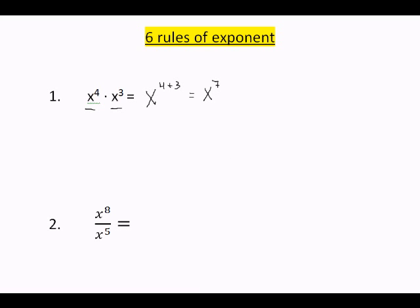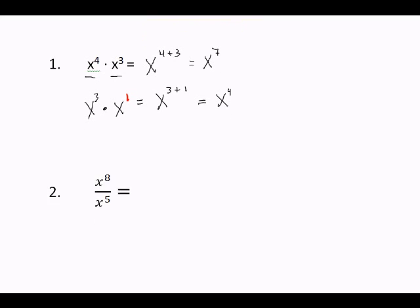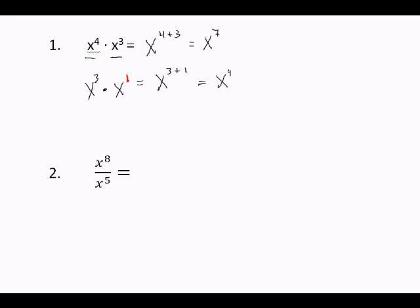That's rule number one: when you multiply two numbers with the same base, the base stays the same and you add the exponents. For example, X cubed times X — there's an invisible 1 here, so this is X to the 3 times X to the 1. Base stays the same, add the powers: 3 plus 1 equals X to the 4th power.